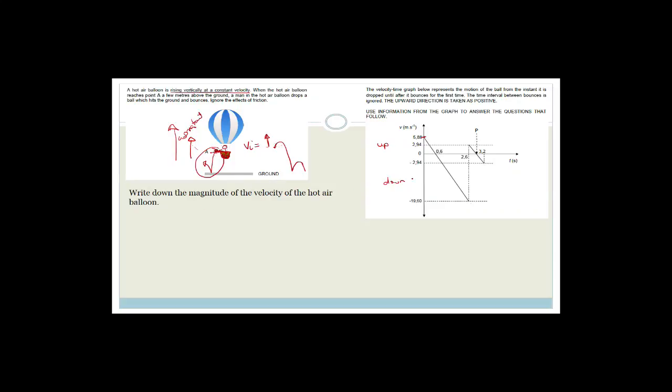Now it says calculate the height above the ground from which the ball was dropped. Note: it says 'use information from the graph.' If they say 'use the graph, do not use equations of motion,' you cannot use equations of motion. If they say 'use information from the graph,' it's borderline. I'm going to show you how to do this using the graph only - in other words, not using equations of motion.